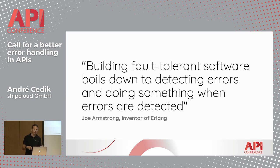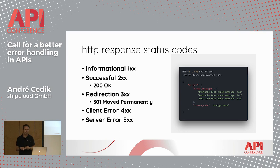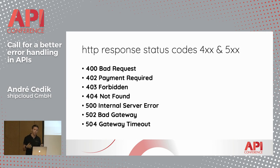Unfortunately, error handling in APIs is done in a lot of different ways at the moment. Let's have a look at the tools we're leveraging today. HTTP response status codes are one of the most basic things communication between systems relies on. They have three digits and are categorized into five main groups.